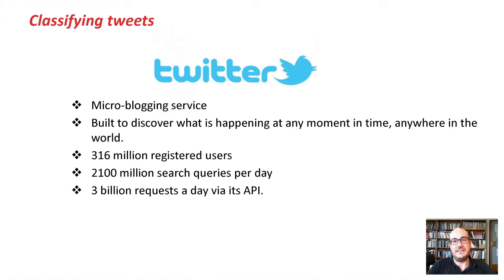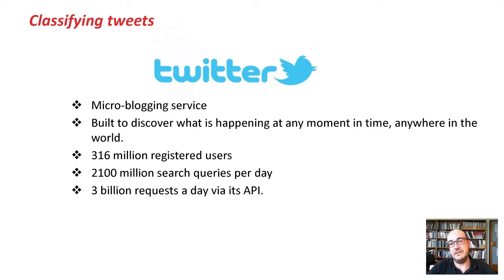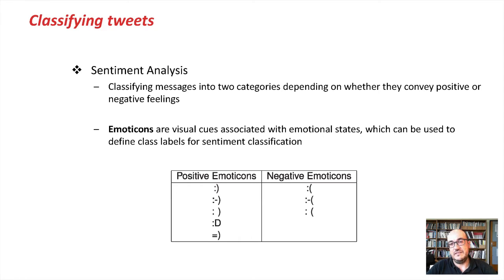Twitter is a very nice example of a data stream because it's data that is produced in real-time. Twitter is a micro-blogging service that is built to discover what is happening at any moment in time. There are more than 300 million users, more than 2,000 million search queries every day, and a very nice thing for us is that data is public and can be accessed through a streaming API.